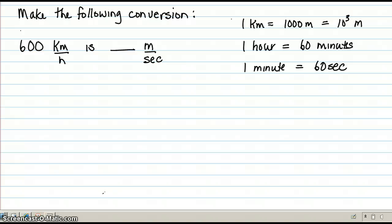Hi, we'd like to make the following conversion. We are given a unit of 600 kilometers per hour, and we want to know what that is in meters per second. So we're going to use the conversion factor method